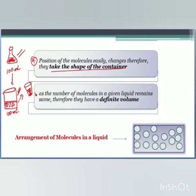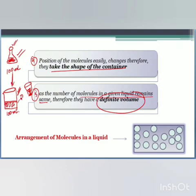The last point is that as the number of molecules in a given liquid remains the same, it will have a definite volume. If we take 100 ml of water in a conical flask and pour it into a beaker, a glass, or a jug, the volume of the water will always remain the same. Why? Because the number of molecules in the liquid are not changing. So we have discussed about the arrangement of molecules in liquids.